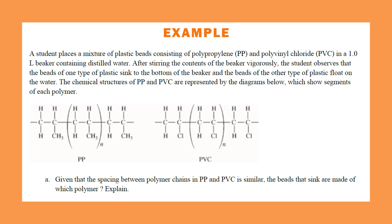We have a mixture of plastic beads consisting of polypropylene and polyvinyl chloride in a one-liter beaker. After stirring, the student observes that one type of plastic bead sinks and the other floats on water. Since the spacing between polymer chains is similar, the biggest difference is the chlorine versus the methyl group — chlorine is much heavier, making it more dense, causing it to sink compared to polypropylene.